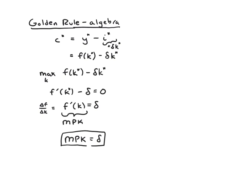You can use this as a condition for testing whether you've hit the maximum. If mpk equals delta, then you've maximized your consumption. If mpk doesn't equal delta, because it's either bigger or smaller, then you haven't picked the golden rule amount of capital. You don't have the right savings rate. You don't have the golden rule savings rate.